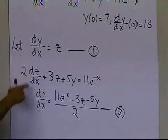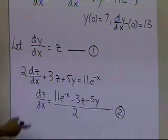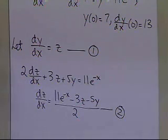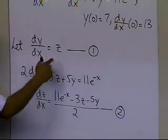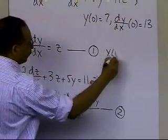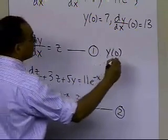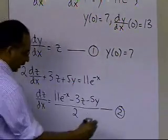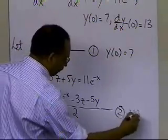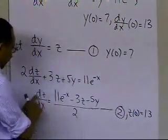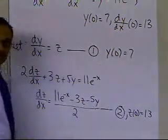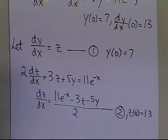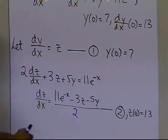We now have a coupled first-order differential equation system, which we can solve using any of the methods we've learned for solving initial value ordinary differential equation problems. The initial conditions are y(0) = 7, and z(0) = 13, because z is nothing but dy/dx, and dy/dx at x=0 is 13.